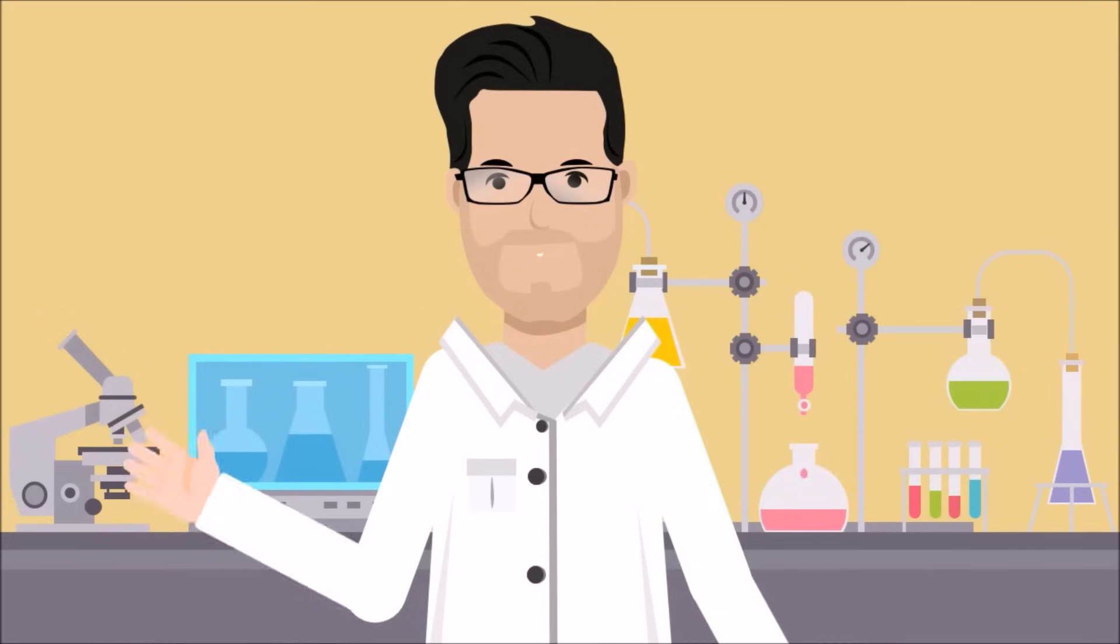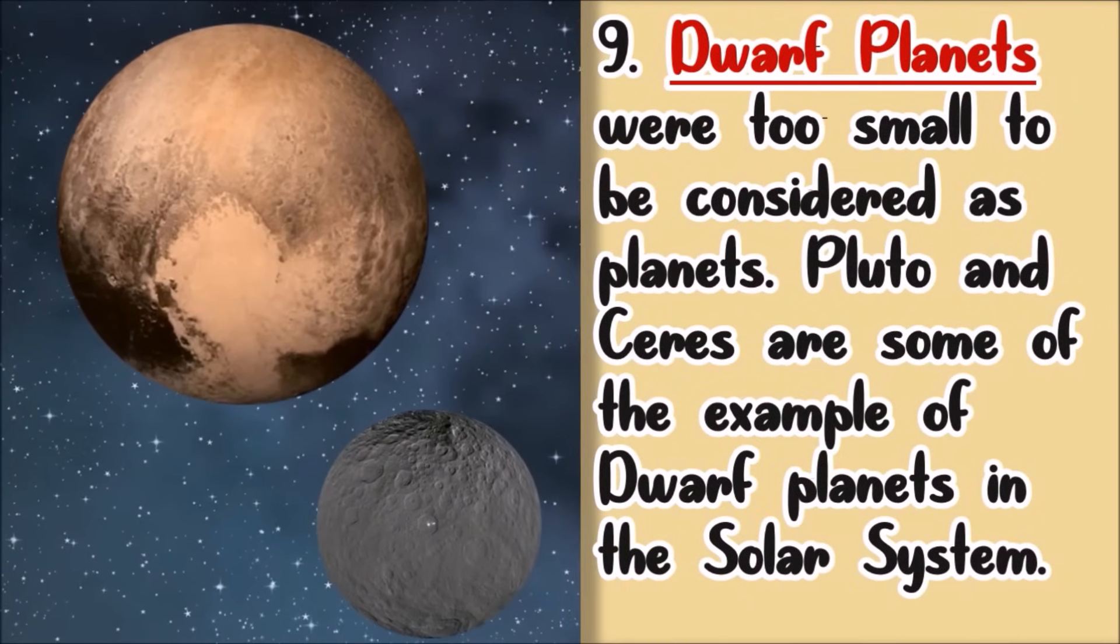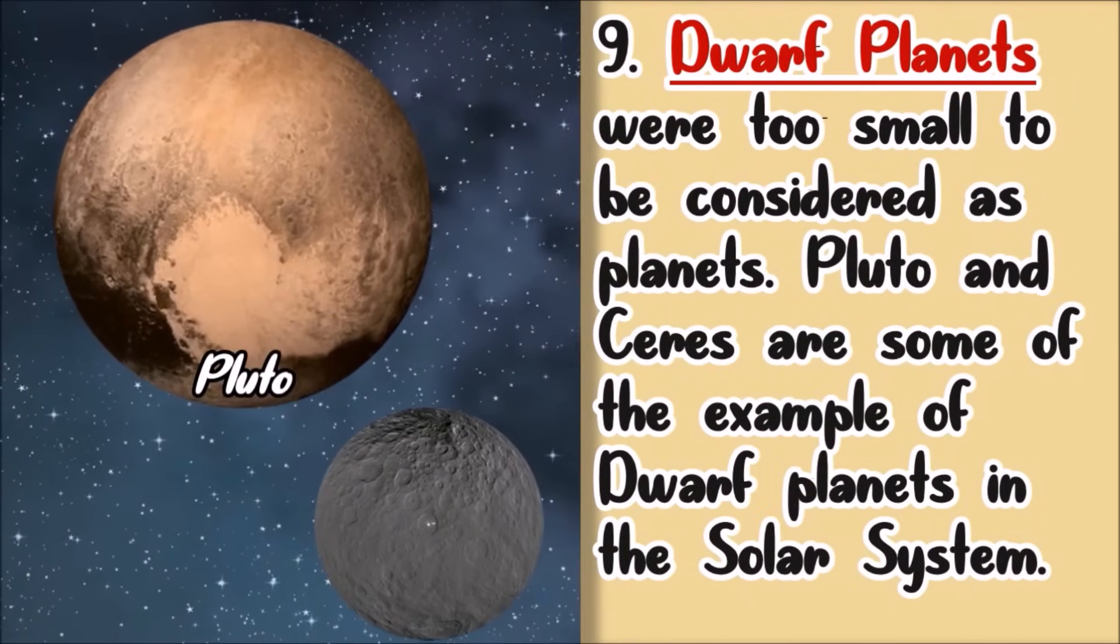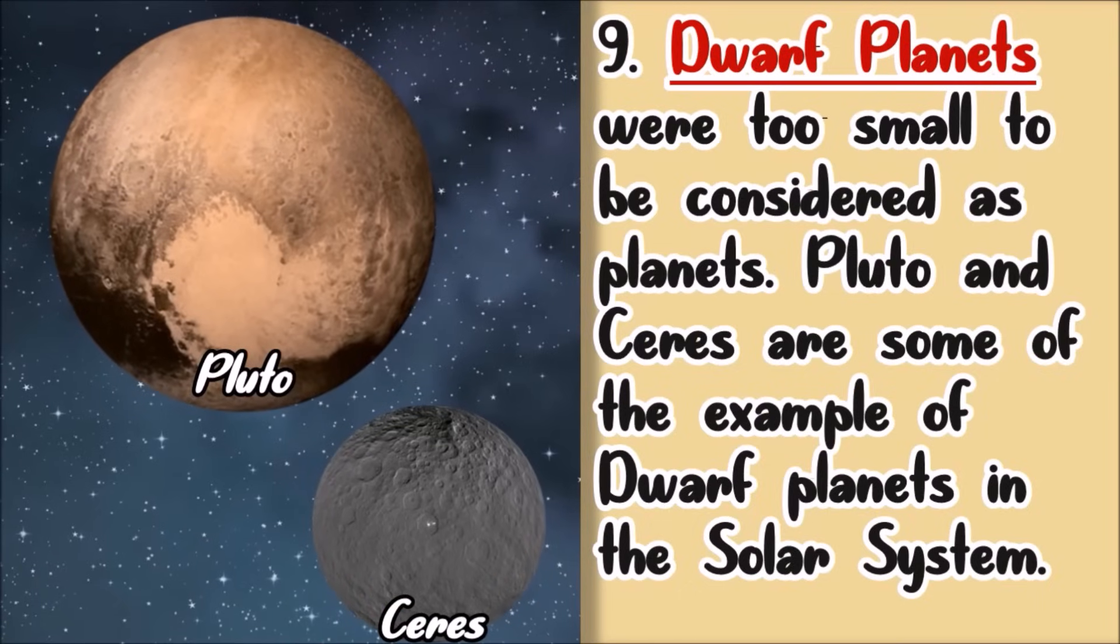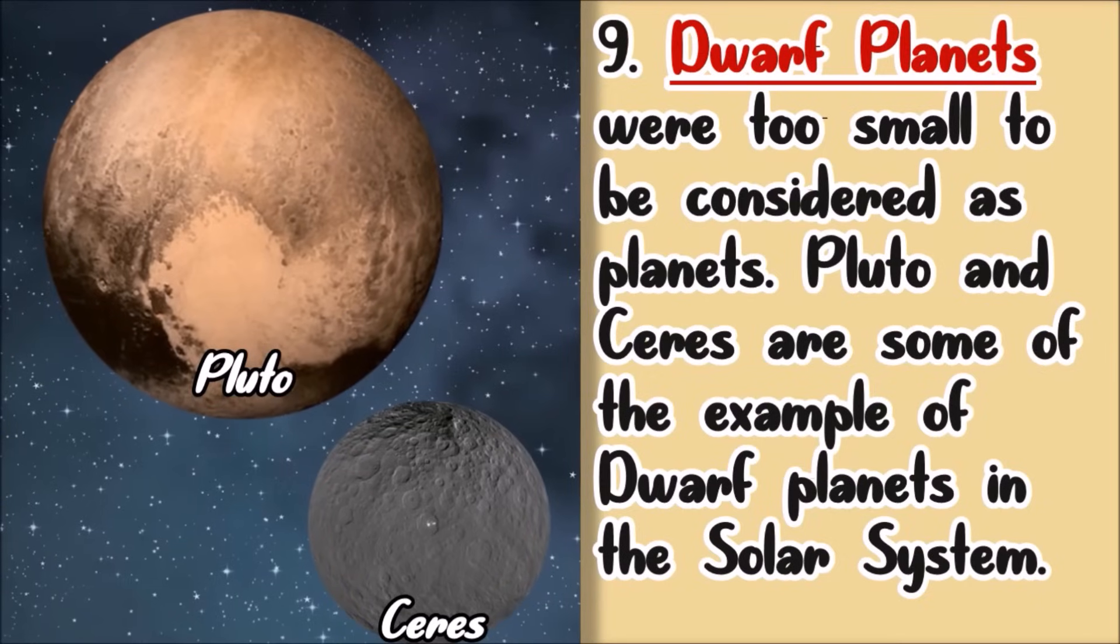And the last member of the solar system are the dwarf planets. They are too small to be considered as planets. That is why they are called dwarf planets. Pluto and Ceres were considered dwarf planets of the solar system.